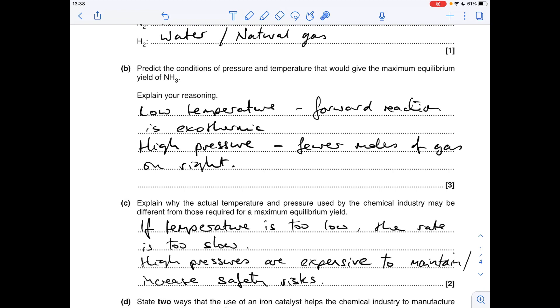Part C is the classic follow-up question to B, talking about why the chemical industry might use different conditions of temperature and pressure to the ones derived from Le Chatelier's principle.